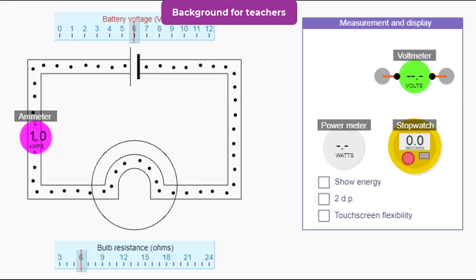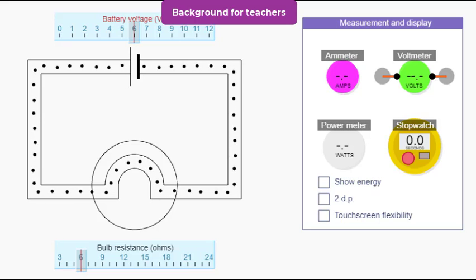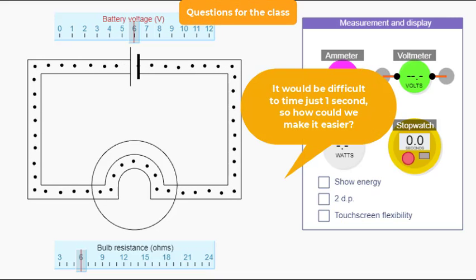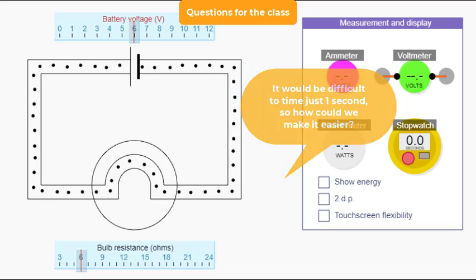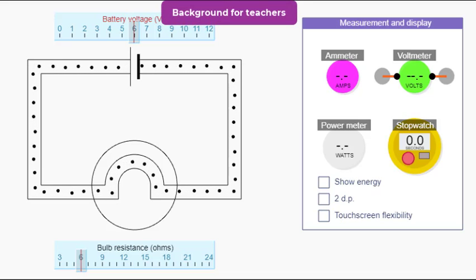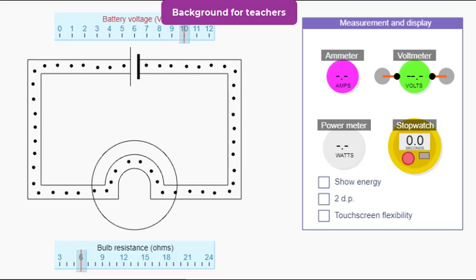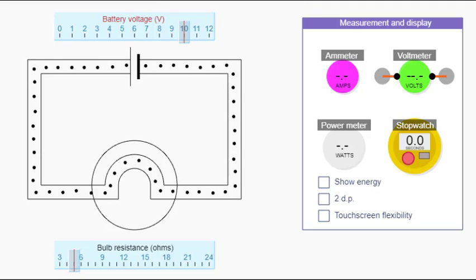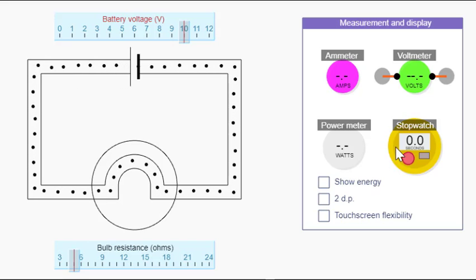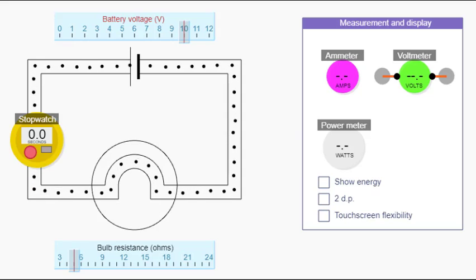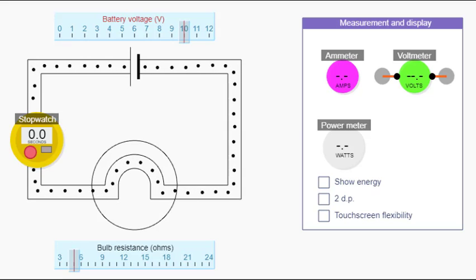We'll put the ammeter back and use it to check our answer. We just count the charges that flow past a point in one second — the greater the charge that flows past a point in one second, the bigger the current. It would be difficult to time just one second, so how could we make it easier? Time ten seconds and then divide by ten. As a teacher, we set the voltage to ten volts and the resistance to five ohms, which should give us a current of two amperes. Let's use the stopwatch to set a point on the circuit and count the charges that disappear behind it.